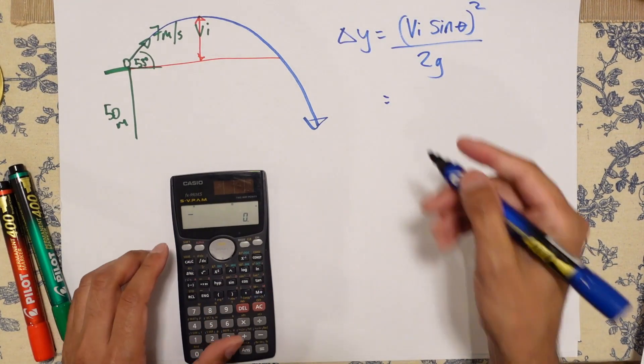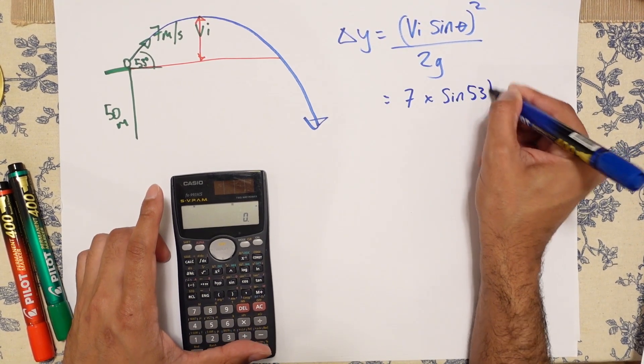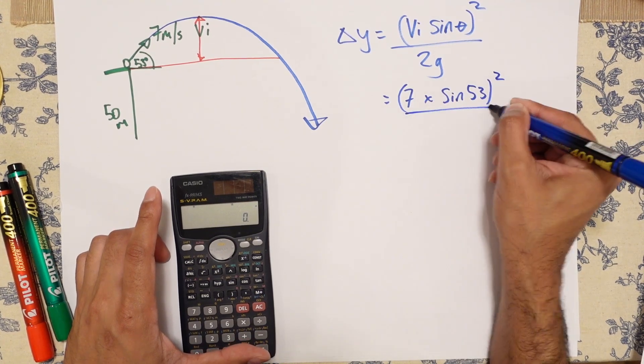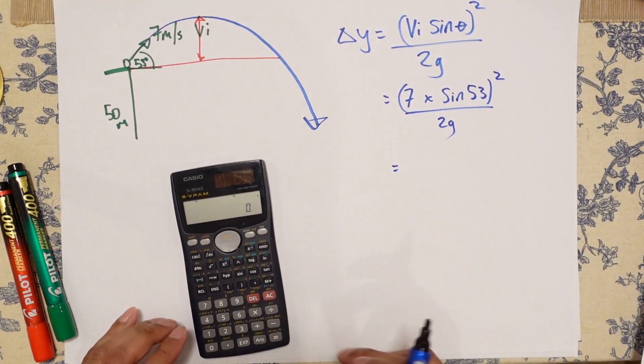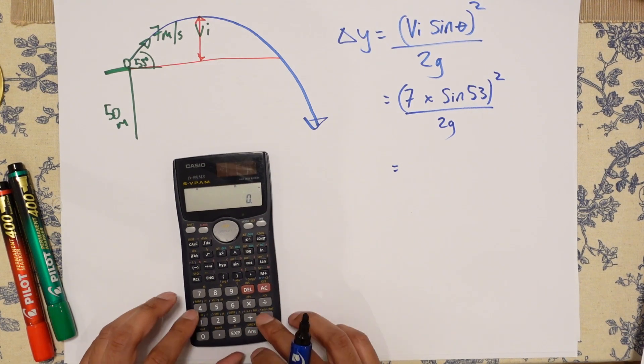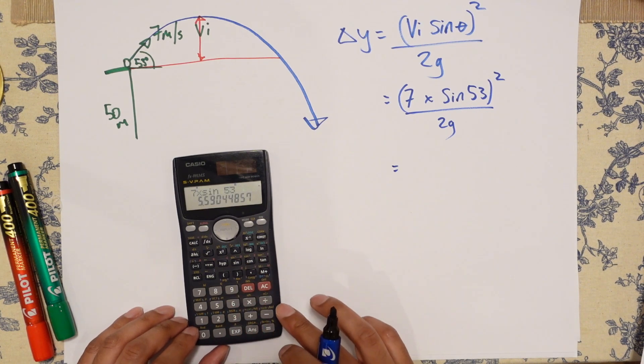So VI is 7 times sine 53 squared divided by 2G. That's 9.8, by the way.